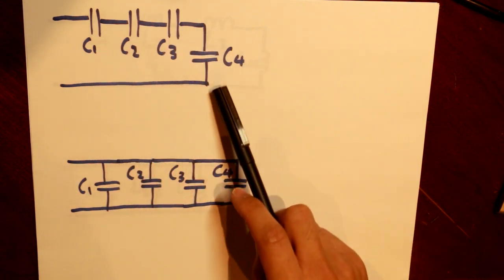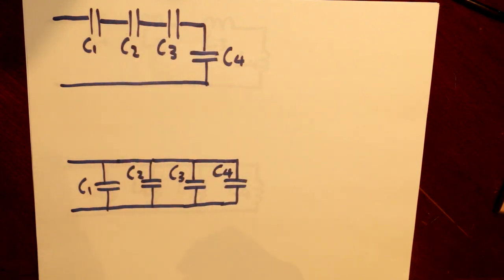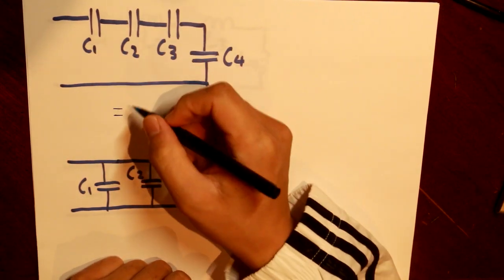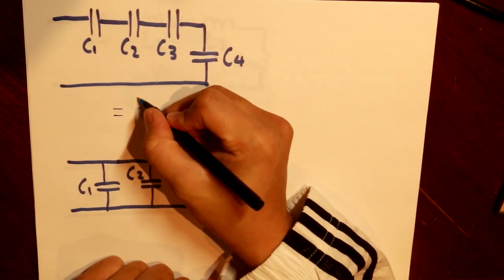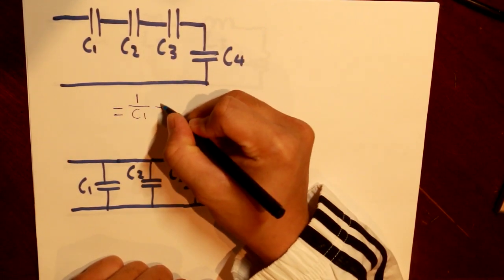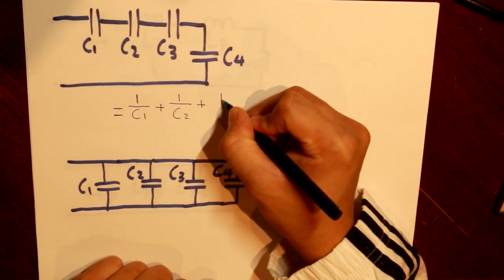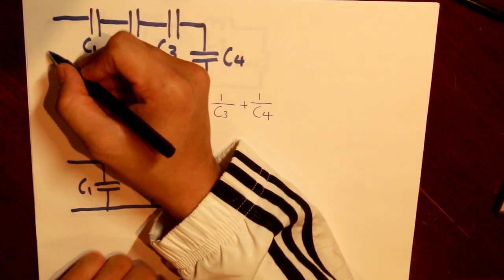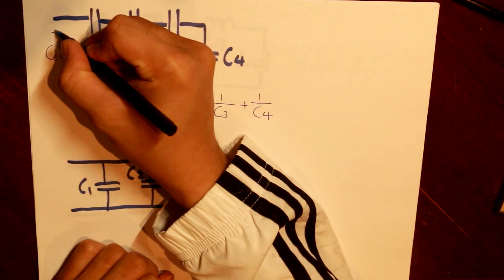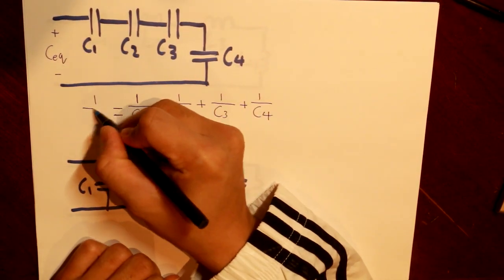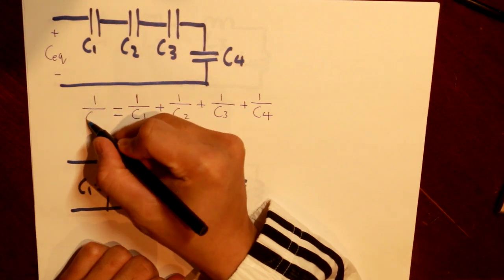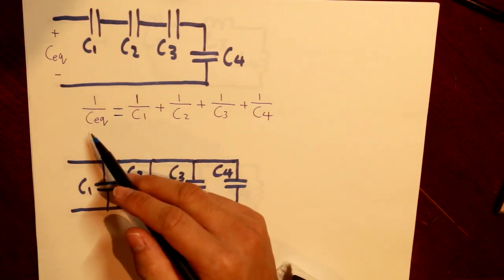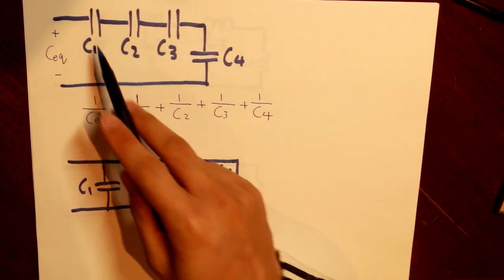When capacitors are in series, our equation has terms 1/C1, 1/C2, 1/C3, and 1/C4. Our equivalent capacitance is the inverse of all four of those terms added together. That is what our equivalent capacitance looks like when capacitors are in series.